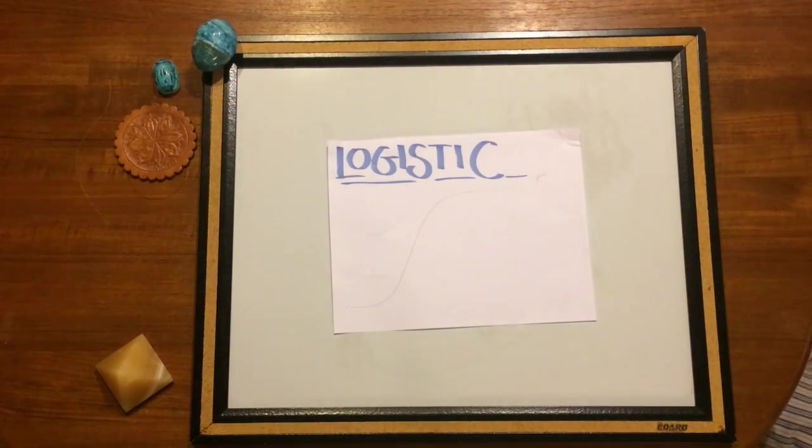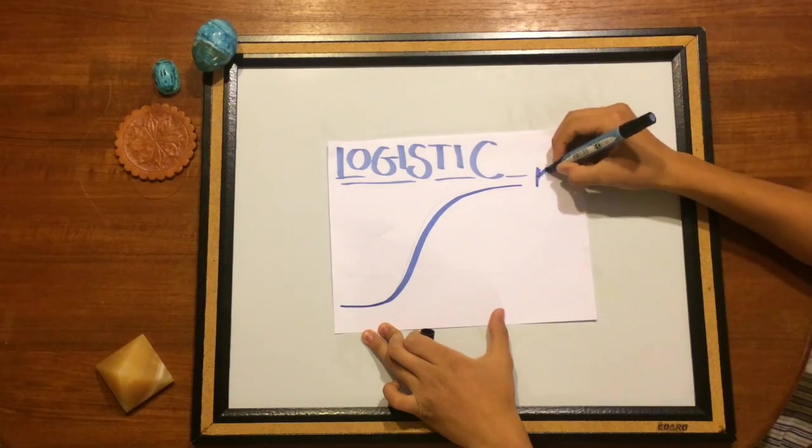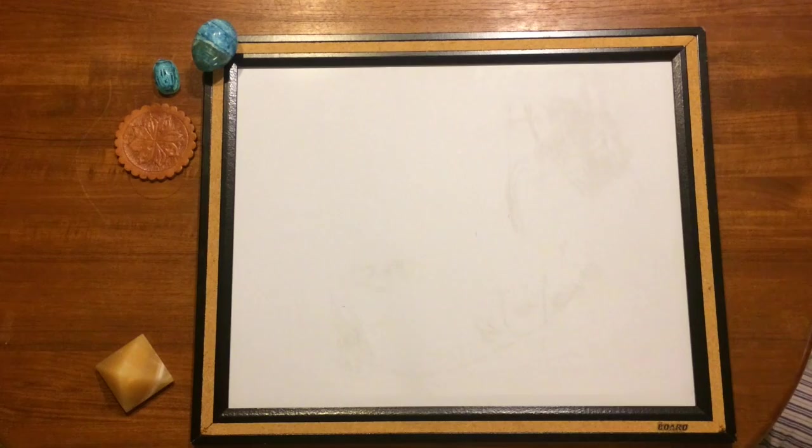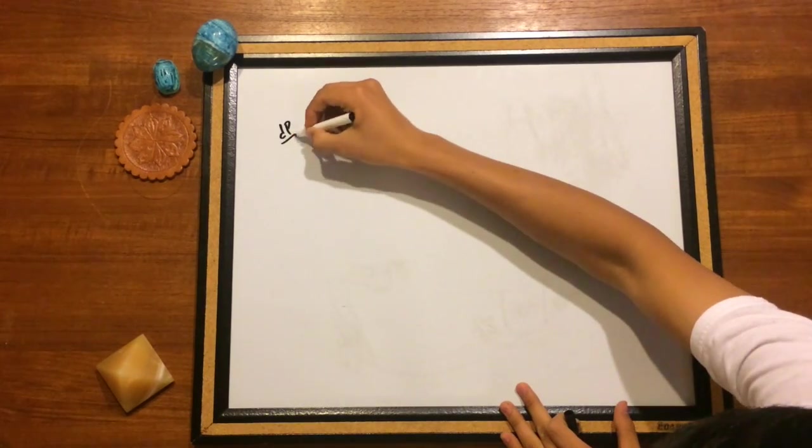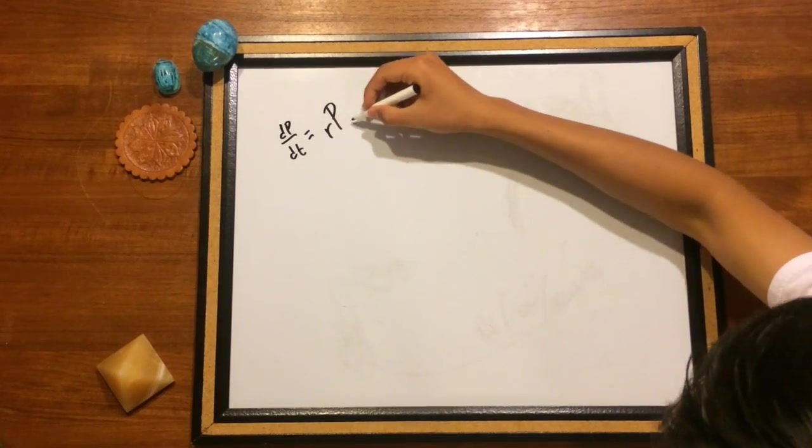This is logistic growth, in which the upper bound of the function is the carrying capacity of the population. The differential equation for such growth is as follows, where the growth rate of the population with respect to time is equal to R, or the rate of maximum population growth, times P,